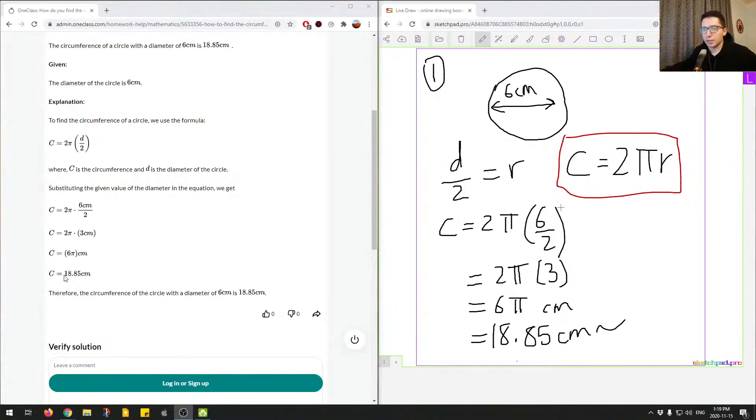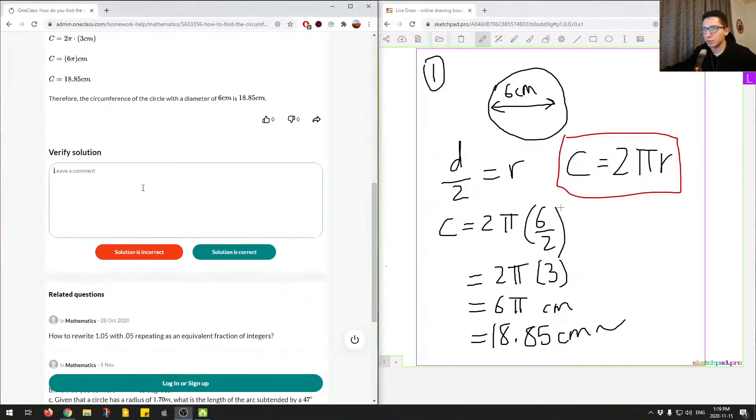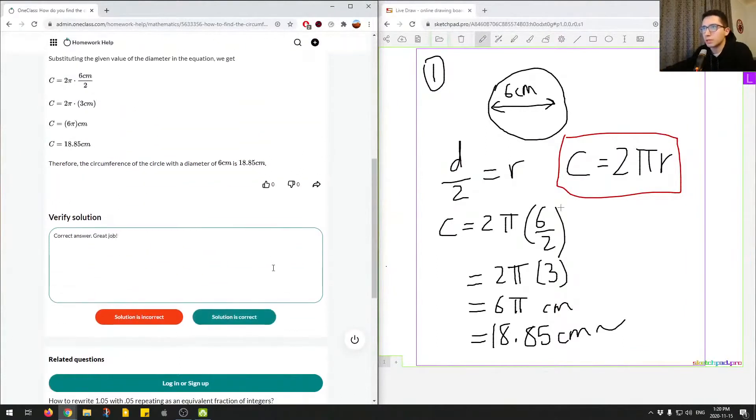I'll put squiggly for approximate. Okay, so we can see here that the junior tutor obtained the correct answer, and they followed a similar process. So we can mark this question as correct. Great job. And we'll move on to the next question.